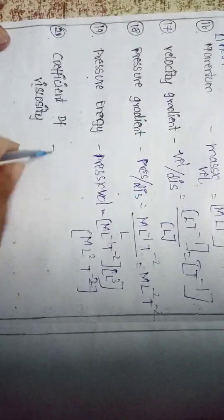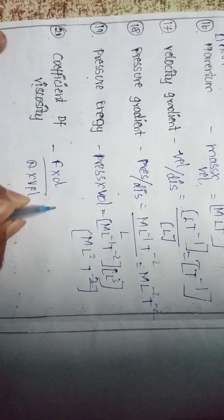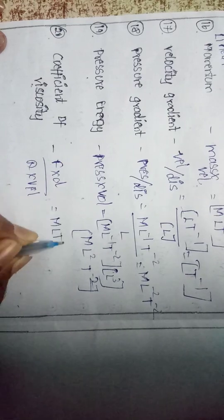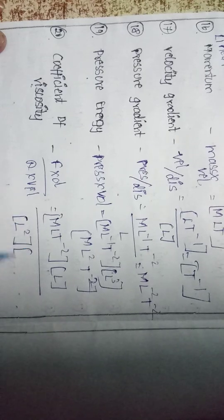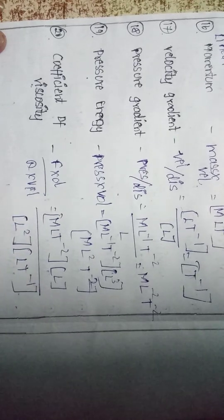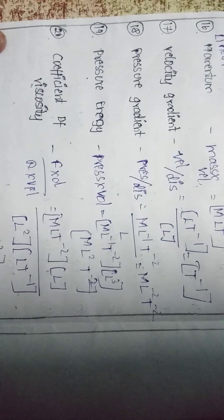The coefficient of viscosity has the formula: force into distance divided by area into velocity. Force is M L T⁻², times distance L, divided by area L² and velocity L T⁻¹. L² cancels, leaving M T⁻² divided by L T⁻¹, which gives M L⁻¹ T⁻¹.